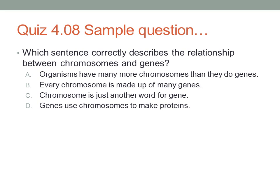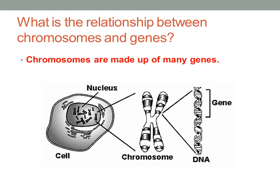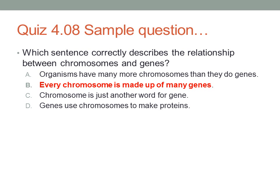So which one correctly describes the relationship between chromosomes and genes? If we go back one slide, we'll see that it says chromosomes are made up of many genes. So again, if you were to unwind those chromosomes, you would see within the DNA that there are genes. So the best answer for this one would be B: Every chromosome is made up of many genes.